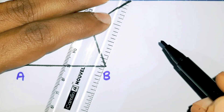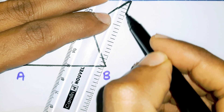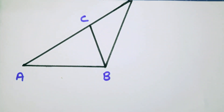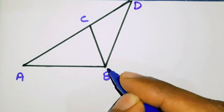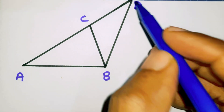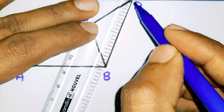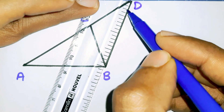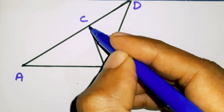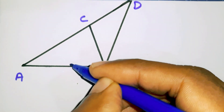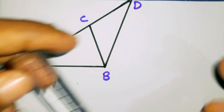This is the point and the name of the point. This is the point of the point. This line will be the same line and parallel. This line will be the same line.